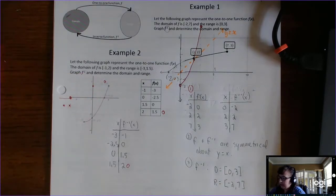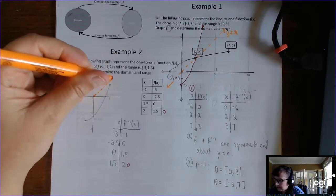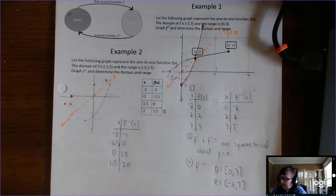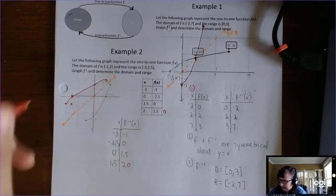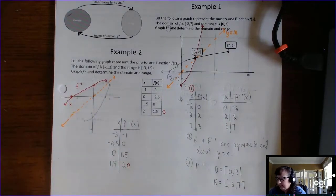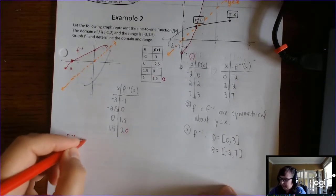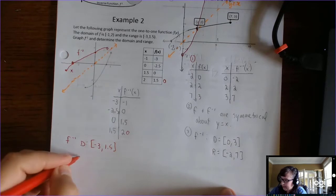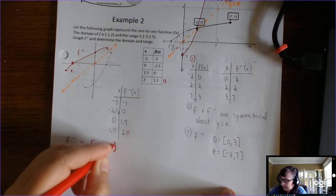There's a hole here and a hole here, so that is the proper graph of the inverse. It says determine the domain and range: the inverse domain is the range of the function, and the range of the inverse is the domain of the function. We make parentheses in the appropriate places.